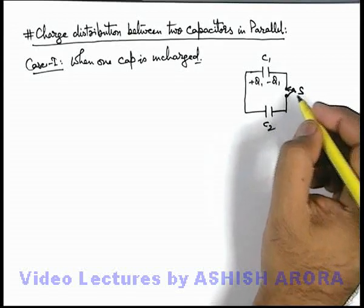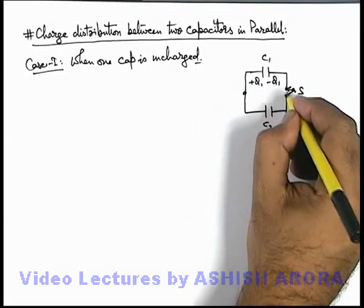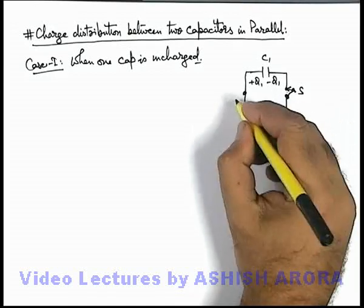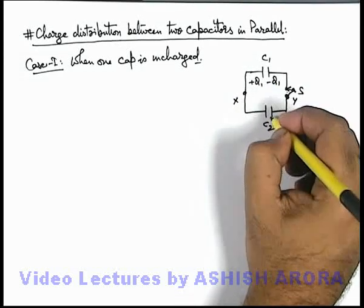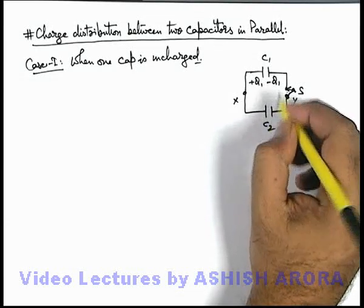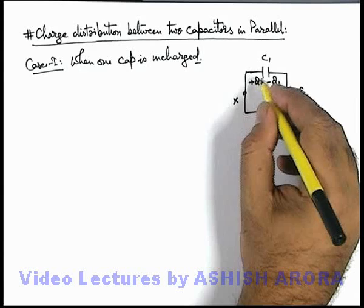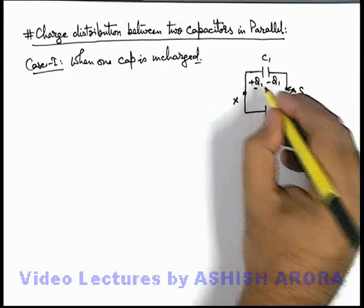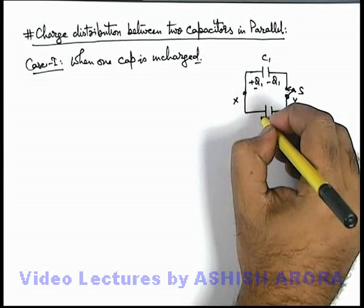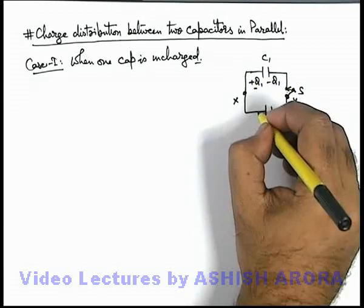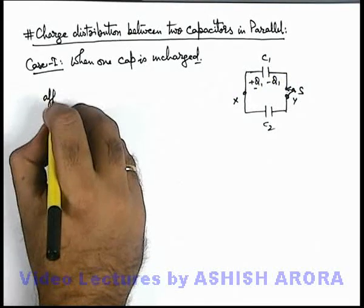As soon as the switch is closed, the equivalent capacitance of this system across terminals X and Y will become C1 plus C2, because these 2 are in parallel. The total charge on the system of capacitors will be only Q1 — on the left side total charge is Q1 and on the right side it will be minus Q1.